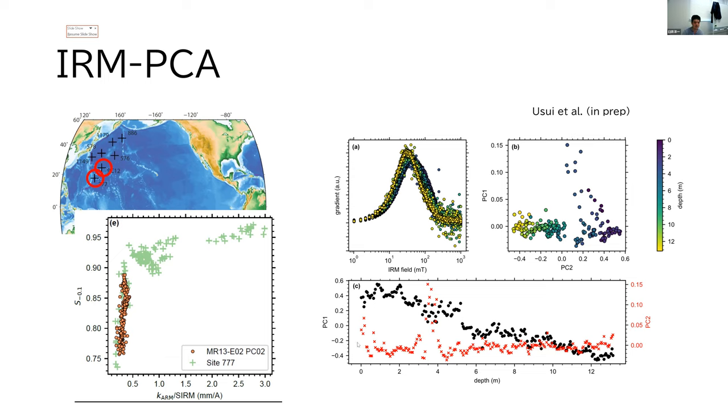when I look at the depth variation of principal components, PC2 shown in red here shows variation in rather restricted part of the core, which I think corresponds to a volcanic ash.